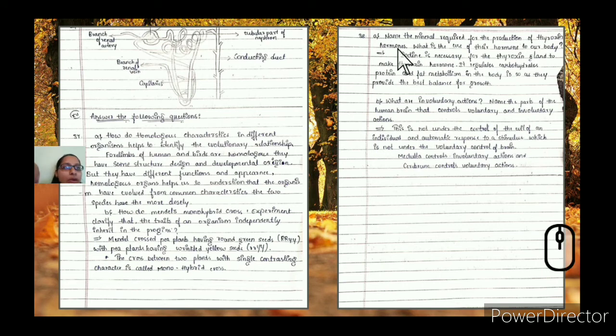Name the mineral required for production of thyroxine hormone. What is the use of this hormone to our body? Iodine is very important for the thyroid gland to make thyroxine hormone. It regulates carbohydrates, proteins, and fat metabolism in the body, controlling metabolism and providing balance for our regular growth.